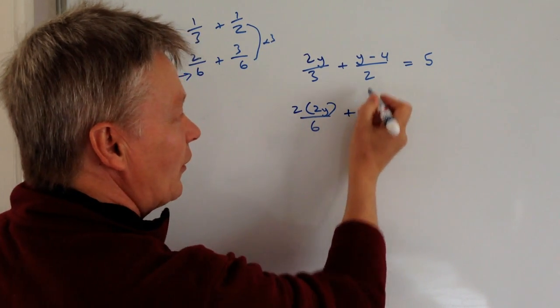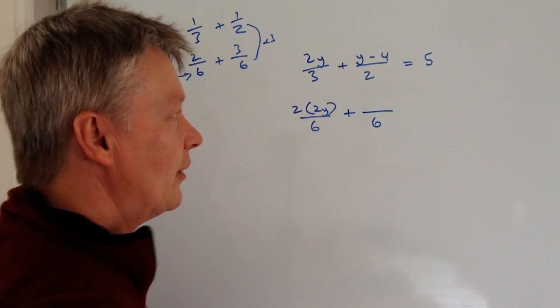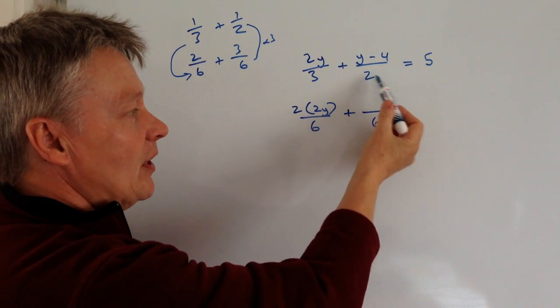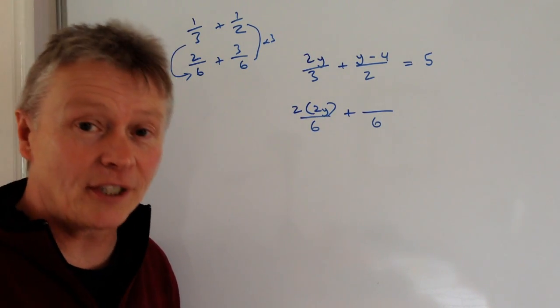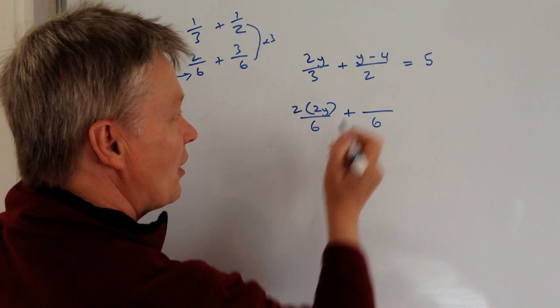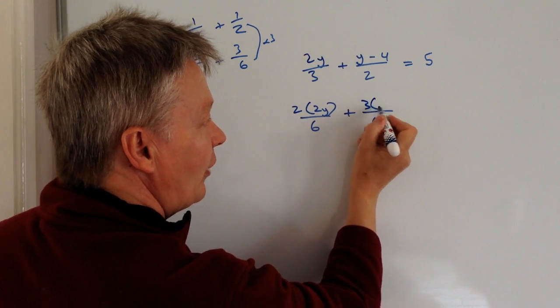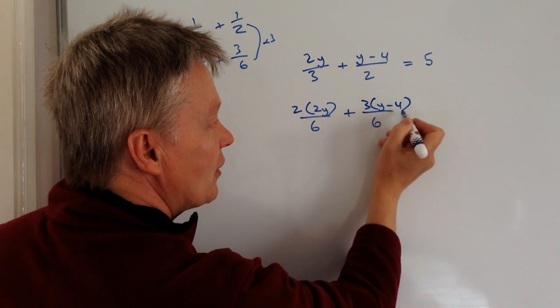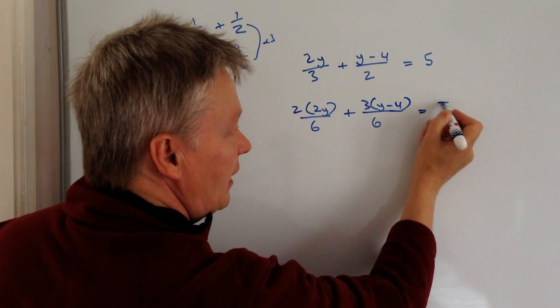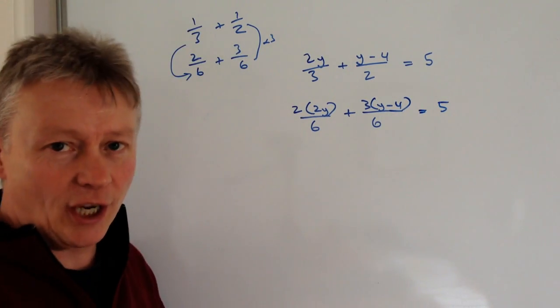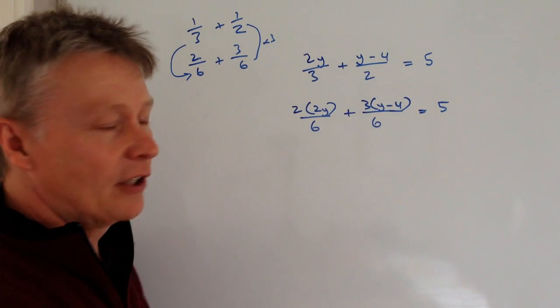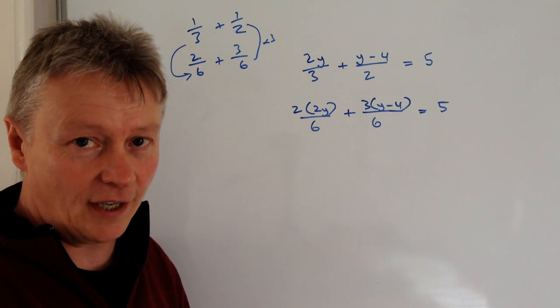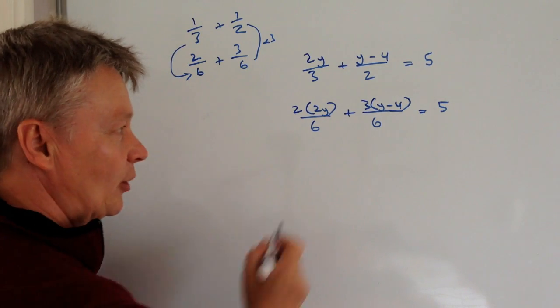Next one along, we've got a denominator now of six. What have we done to the two to get to six? Multiplied it by three times. So the top bit will become three times y minus four. And that's all equal to five. So I haven't really changed anything. All I've done is I've created this addition of these two fractions here.